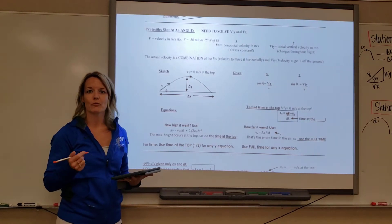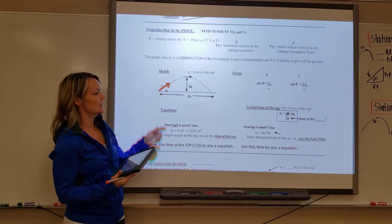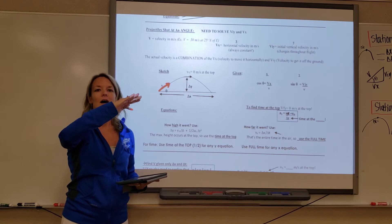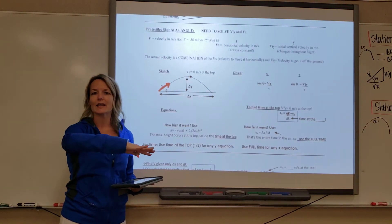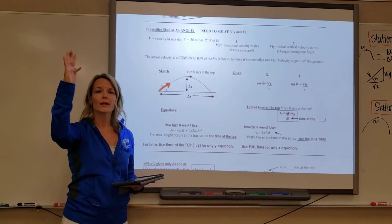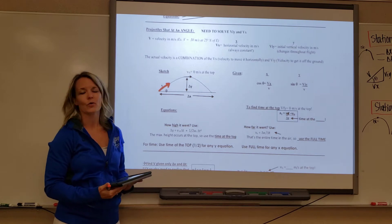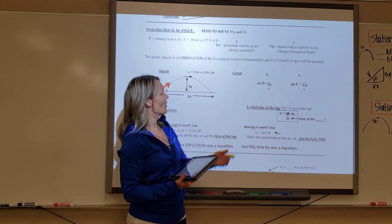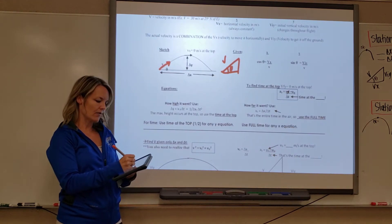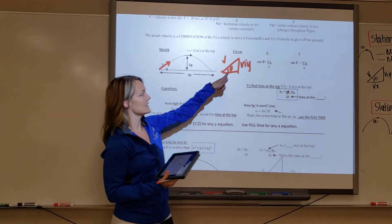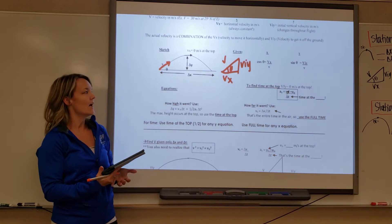The way that we solve for v_x and v_iy, if we are given an angle, is to use sine and cosine. As a projectile leaves, it leaves with an actual velocity that is the hypotenuse of a right triangle. That velocity is a combination of the y velocity needed to get it off the ground and the x velocity needed to push it to the side. We always put the velocity as the hypotenuse and the angle goes inside the triangle. V_iy, since y means up and down, is always the vertical portion of the triangle, and v_x is always the horizontal side.